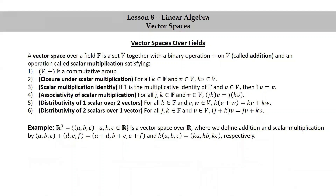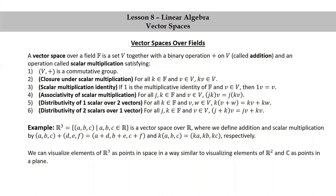As another example, R³ is the set of ordered triples (a, b, c) such that a, b, and c are real numbers. This is also a vector space over R where we define addition and scalar multiplication by (a, b, c) plus (d, e, f) equals (a+d, b+e, c+f), and k times (a, b, c) equals (ka, kb, kc). We can visualize elements of R³ as points in space in a way similar to visualizing elements of R² and C as points in a plane.